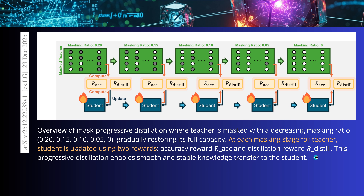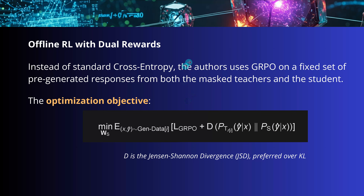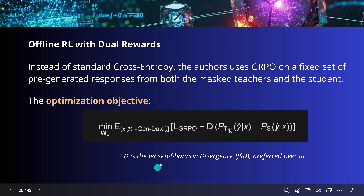For offline reinforcement learning with a dual reward structure, the optimization objective uses the classical Jensen-Shannon divergence rather than the KL divergence, because it is much more stable in this process.